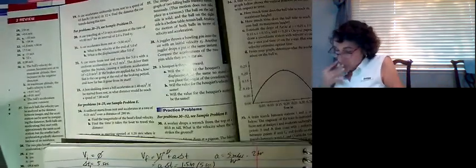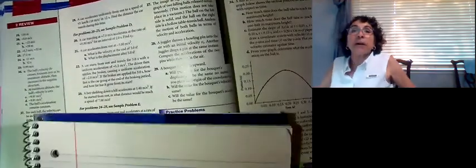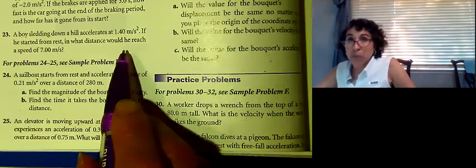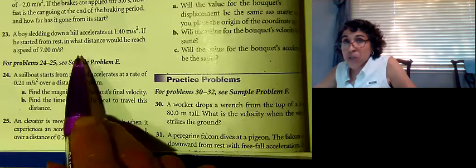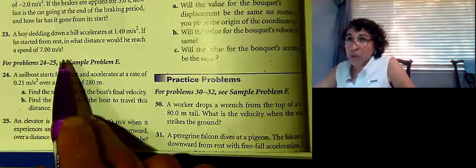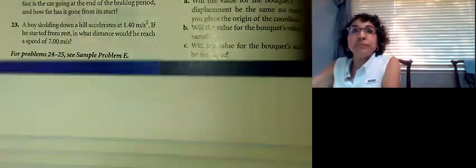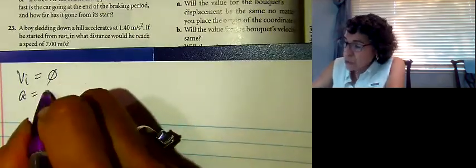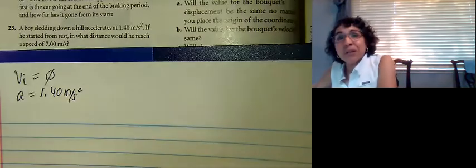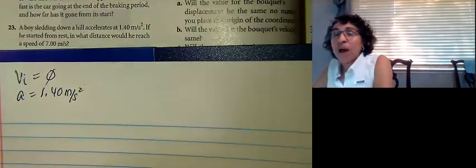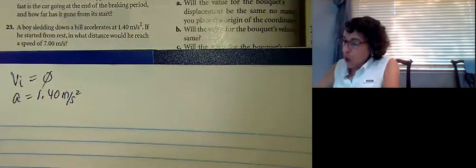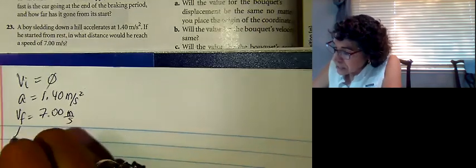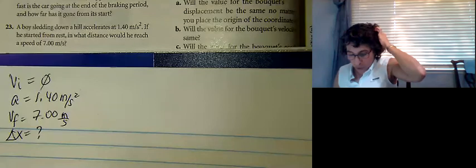Now problem 23. A boy is sledding down a hill, accelerating at 1.4 meters per second squared. If he starts from rest — that's a clue, V initial equals zero — what distance would he reach at a speed of 7.0 meters per second? So we know: V initial equals zero, acceleration is 1.4 meters per second squared (positive, since he's sliding downhill with gravity), and V final is 7.00 meters per second. We want to find displacement Δx.